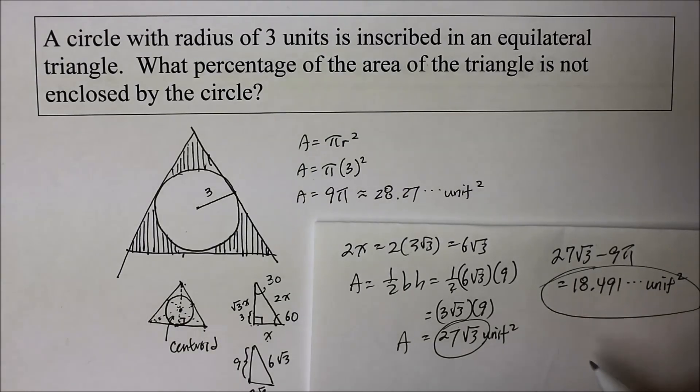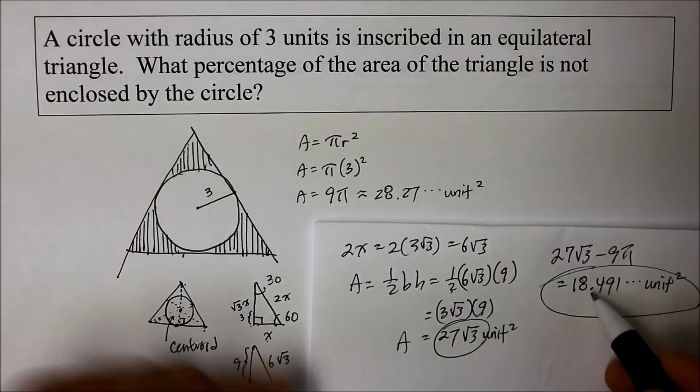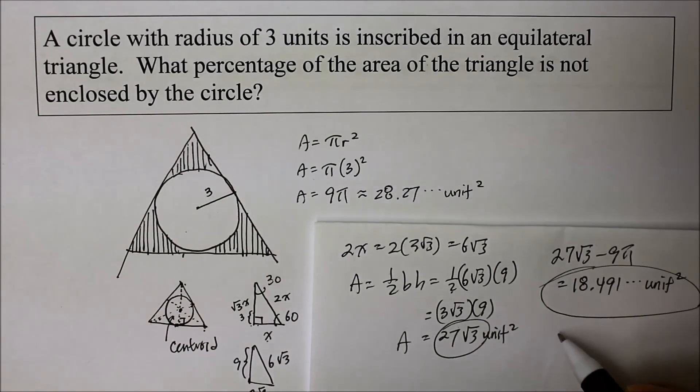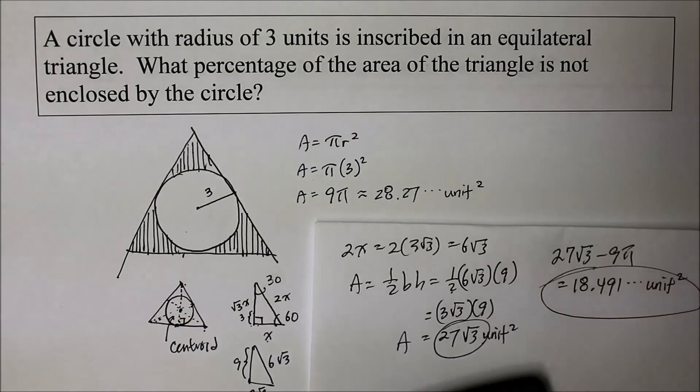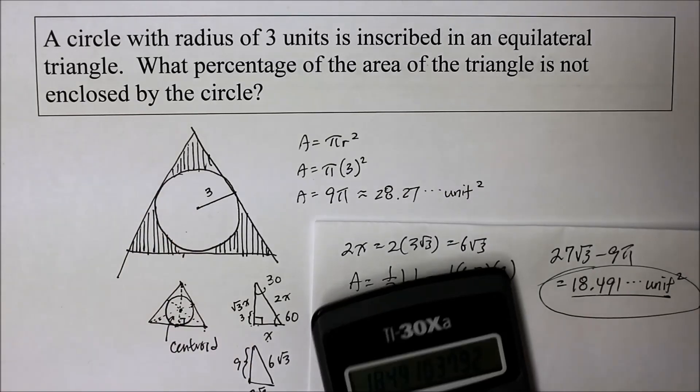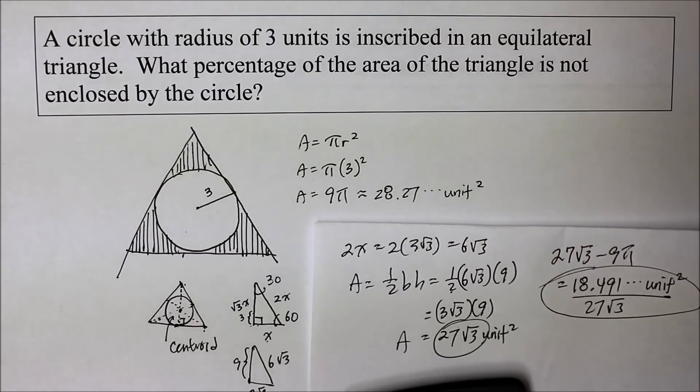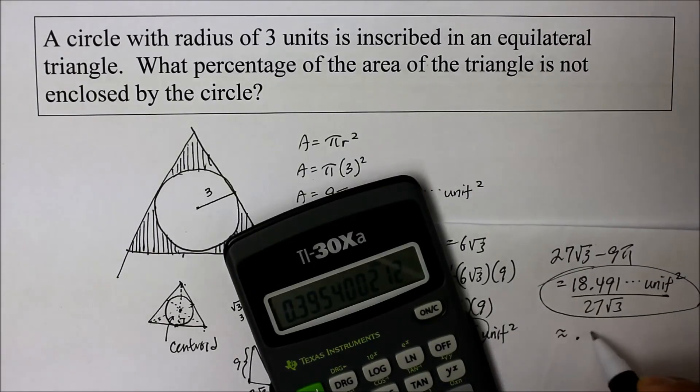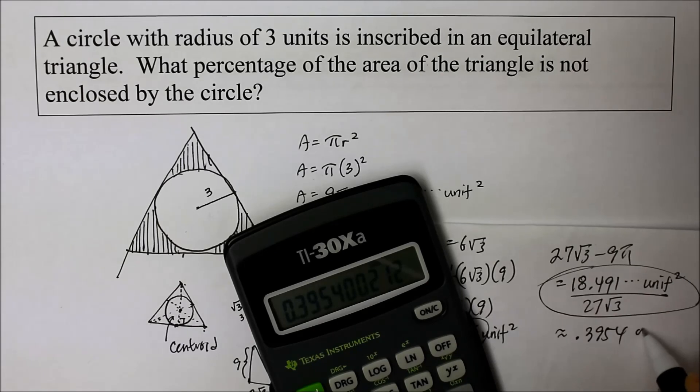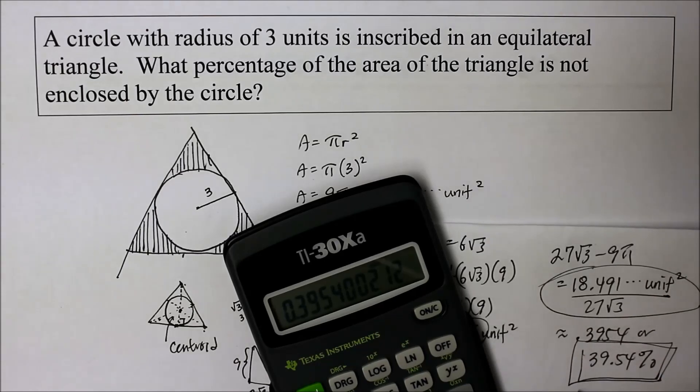So what's the percent? So the percent is, it says what percent is not enclosed. So that is part of the triangle. So it's going to be that eighteen point four nine divided by the area of a triangle, which was, what was it? Twenty-seven square root of three. So let's do that. Approximately point three nine five four or thirty-nine point five four percent. There's the final answer is not enclosed by the circle.